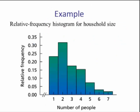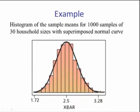Let's look at another example. This is the relative frequency histogram for household size, which is skew right — the number of people ranges from 1 to 7. This next histogram shows the sample means for 1,000 samples of size 30, superimposed with the normal curve. So even though the original population was skew right, the distribution of the sample means becomes normal.